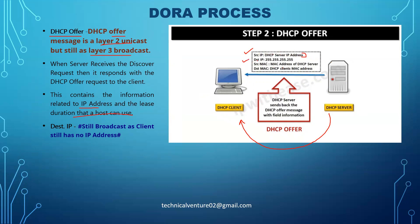The destination IP is still 255.255.255.255 because the IP address has not yet been assigned to the DHCP client. The source MAC is the DHCP server's MAC address, and the destination MAC is the DHCP client's MAC address. The destination IP remains broadcast because the client still has no IP address. The client receives the IP address and lease duration — whether 1 day, 15 days, 30 days, 60 days, or 90 days — from the server.